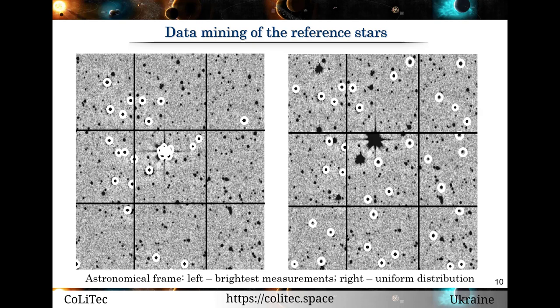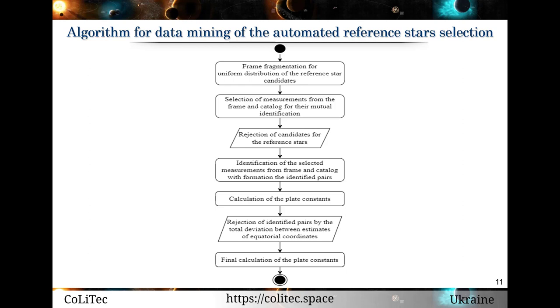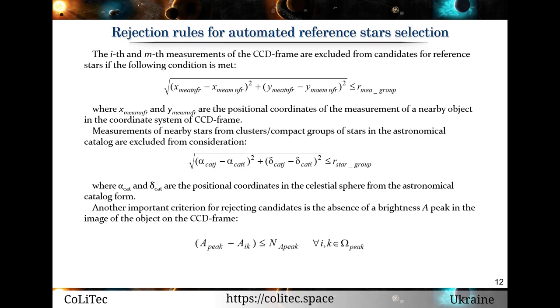Therefore, it is necessary to fragment the frame into equal areas for uniform distribution of identified pairs when selecting candidates for reference stars. In each such frame fragment, the same number of objects with a bright image is selected. The algorithm for automated reference star selection includes: fragmentation of the frame, iterative calculation of the plate constants for astrometric reduction, and the main step — appropriate rules for the rejection of candidates. Rejection rules are developed to properly exclude measurements of nearby objects from candidates for reference stars, as well as from the catalog for identification. Another important criterion for rejection is the absence of a brightness peak in the object's image in the CCD frame. All such rejection rules are presented via equations.